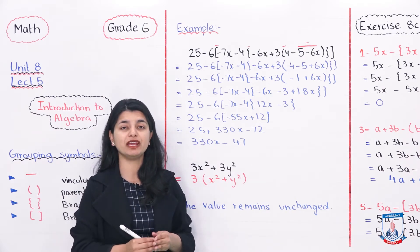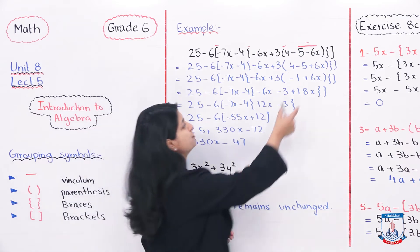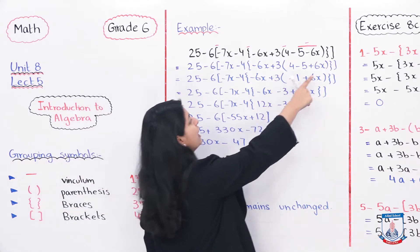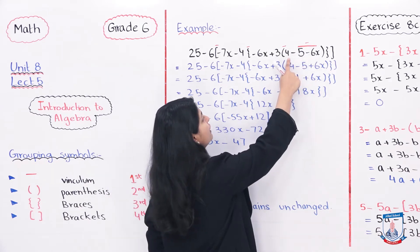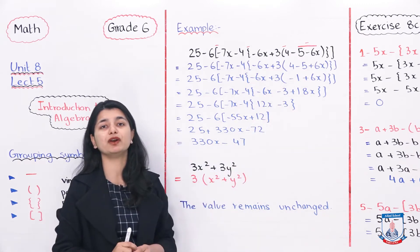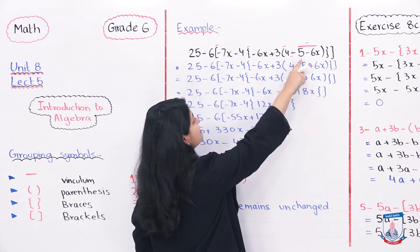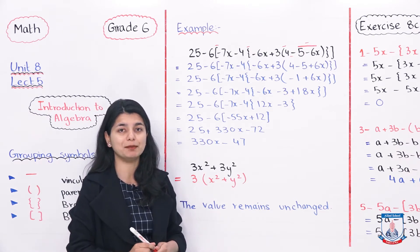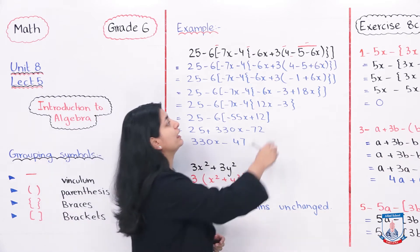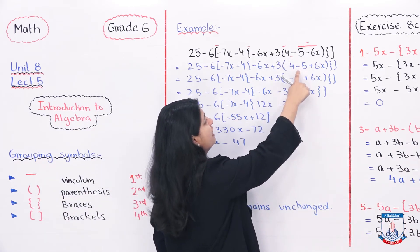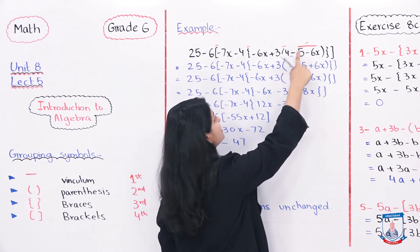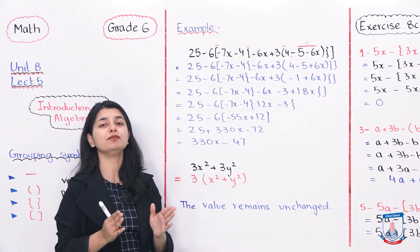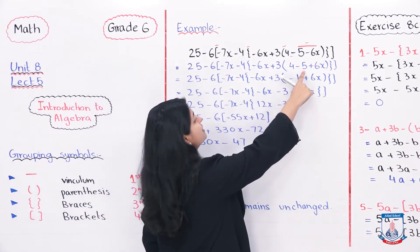Because we know that the first step involves the vinculum, we will first look at the portion under the vinculum: 5 minus 6x. We will see what's inside the vinculum — there is a negative sign outside, so we will multiply that sign with both numbers, 5 and 6. Minus multiplied with 5 stays minus 5, but minus multiplied with minus 6x becomes positive 6x, because when you multiply like signs the result is plus. So you have opened the vinculum and you have got 4 minus 5 plus 6x.